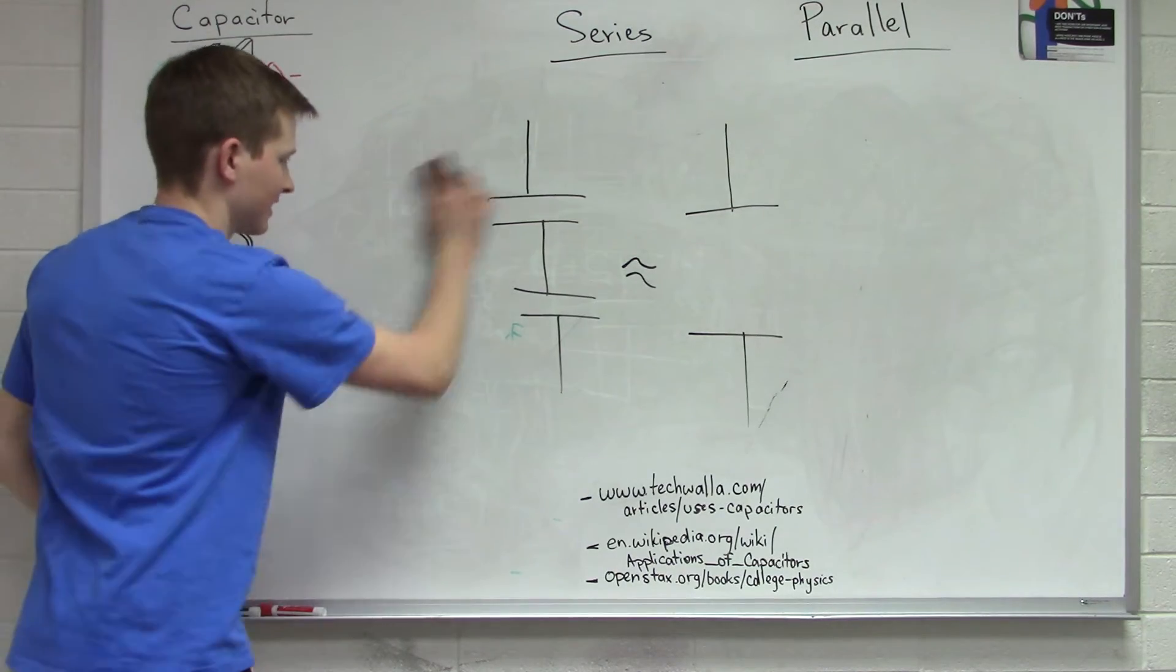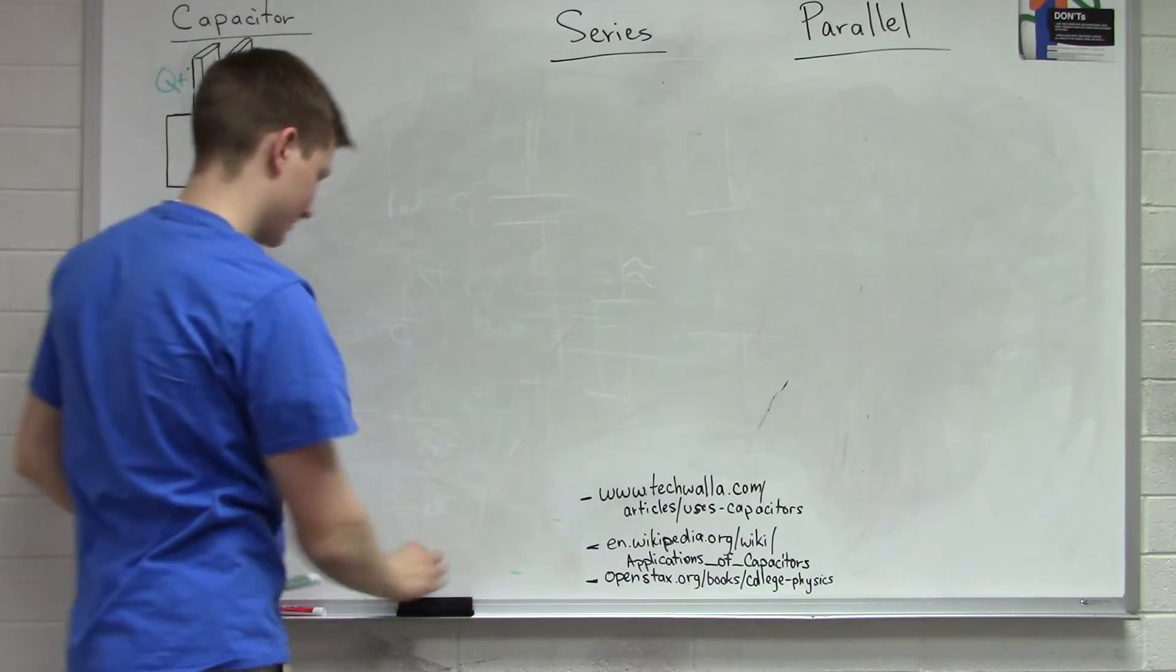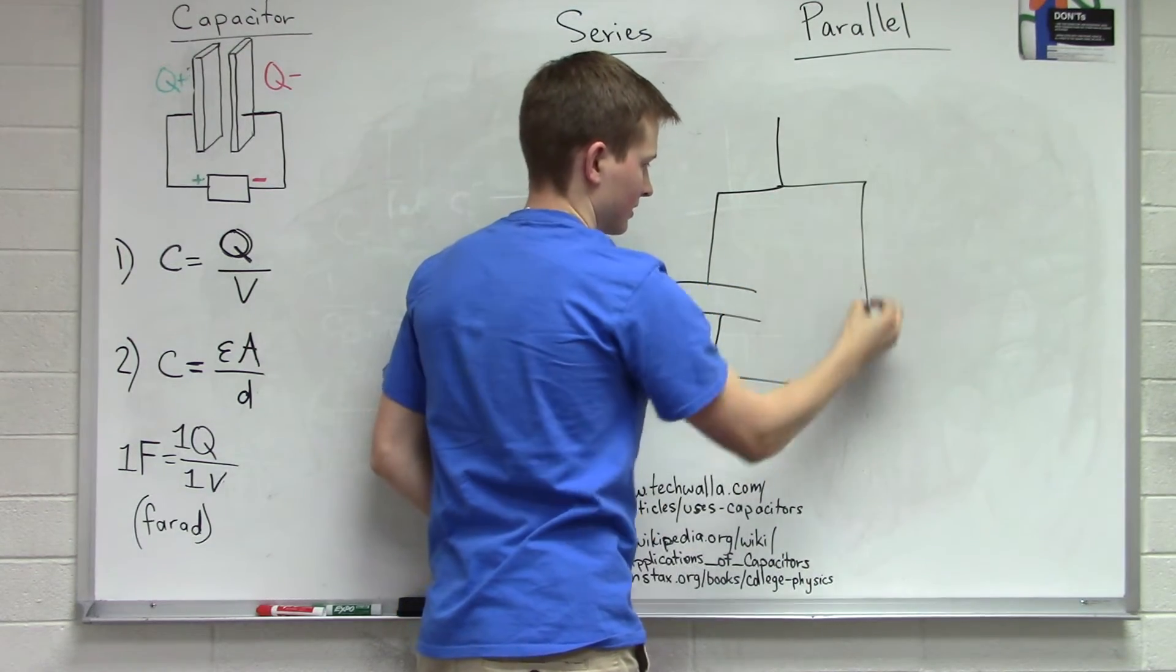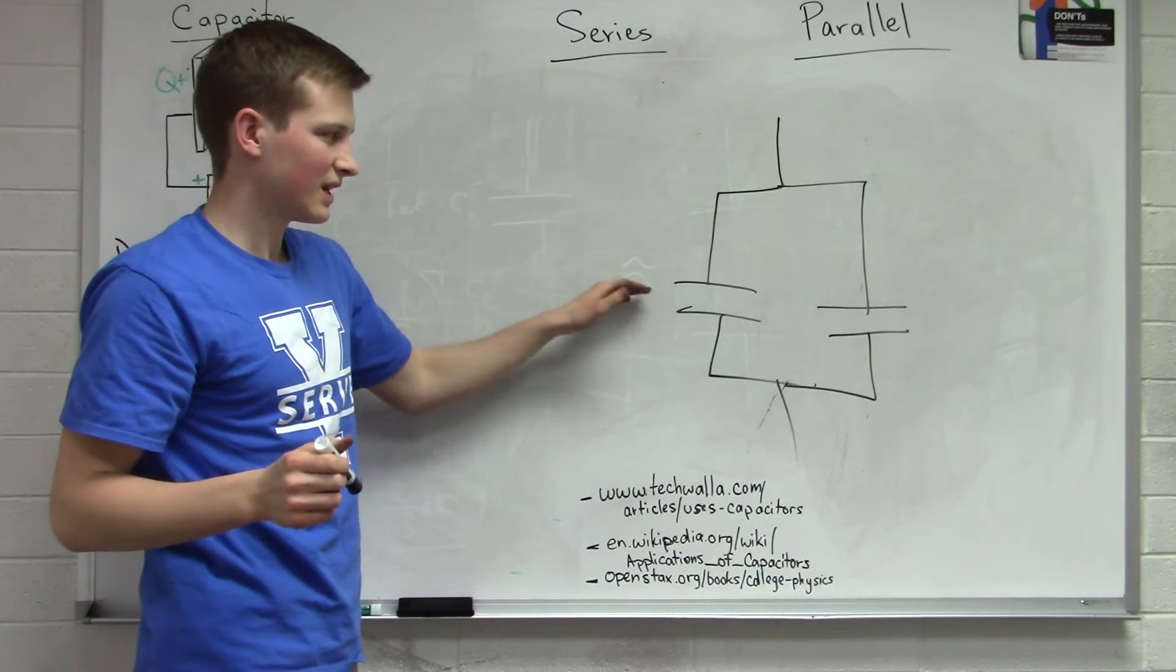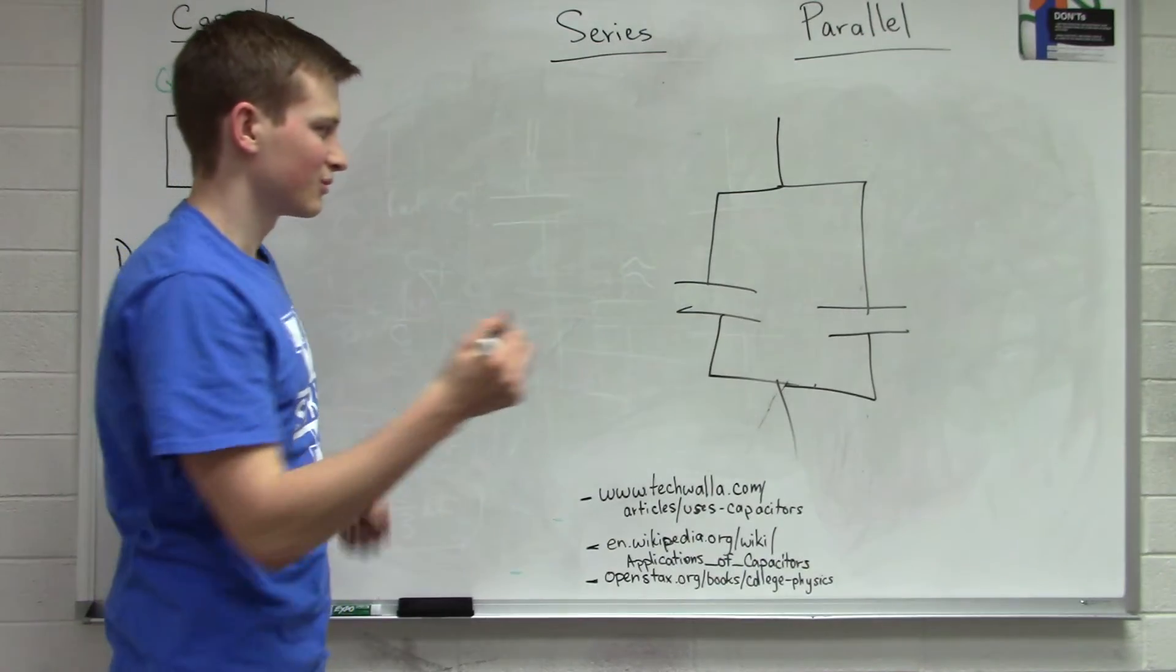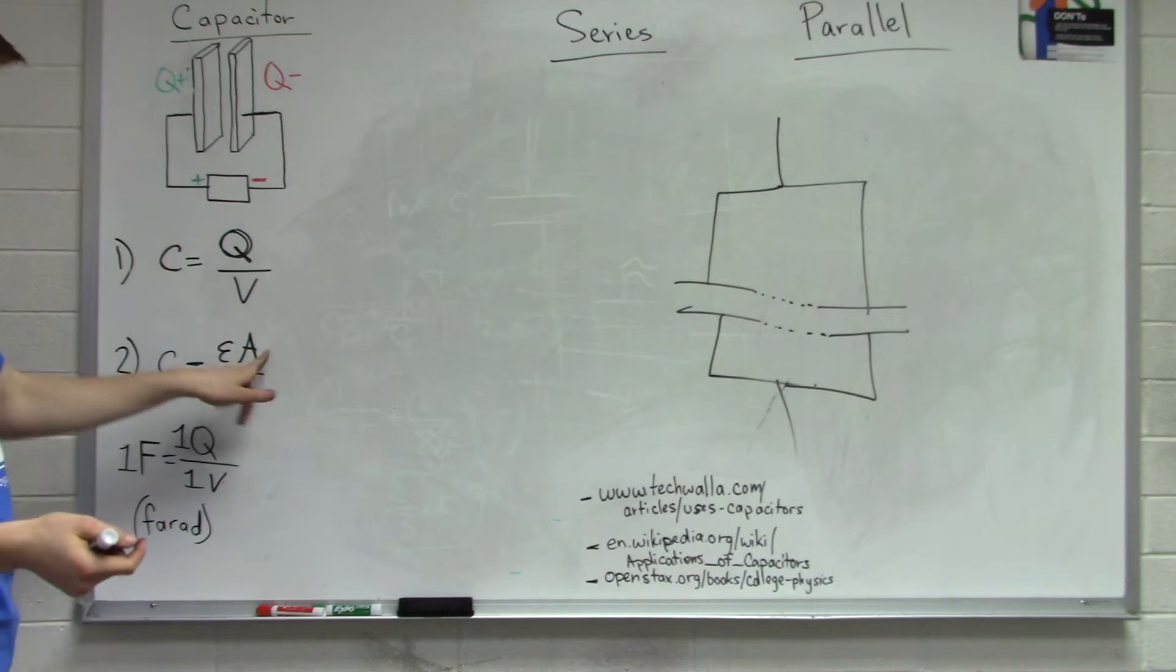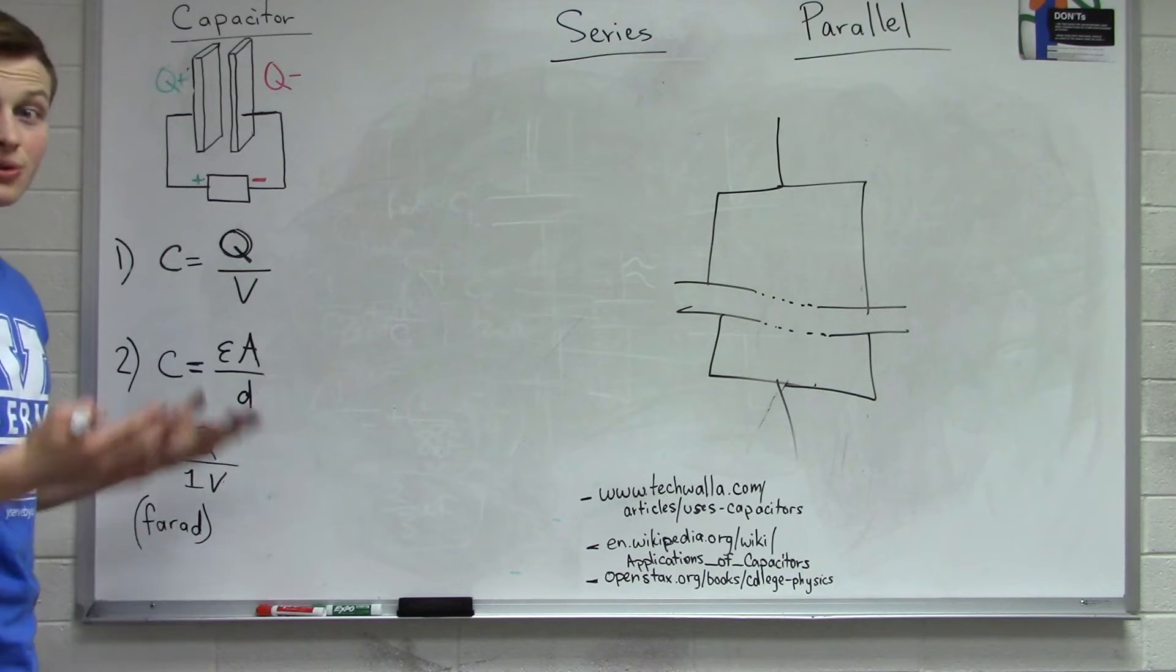Now we're going to move on to capacitors in parallel. So here we have a rough sketch of capacitors in parallel. The way I like to think about it is we effectively have one big capacitor with a huge surface area. And so if we have a large surface area, we can expect that the capacitance is going to increase.